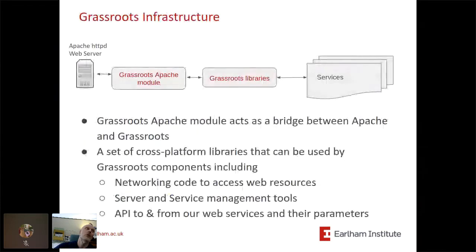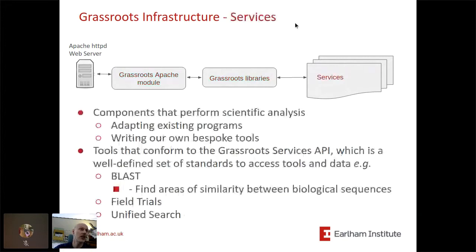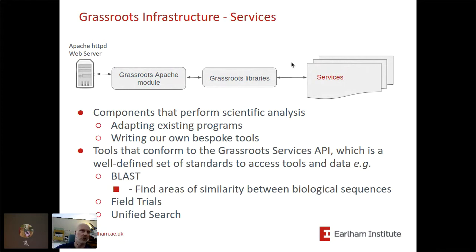Now I'll give an overview of the Grassroots infrastructure. We have a set of common core libraries that take care of how we describe our parameters and web service APIs, how to call different systems, reading and writing files, and so forth. That is attached to an Apache web server via our own Apache module, which connects all the plumbing together. The bits that actually do the scientific analysis are what we call services — either adapted existing programs wrapped into our API, or bespoke tools we write. As long as systems conform to our API, which is a well-defined set of standards and JSON schema, they can run inside it. We have tools such as BLAST — a common bioinformatics tool for finding areas of similarity between biological sequences — as well as our own custom services like field trials, field pathogenomics searching, and more.